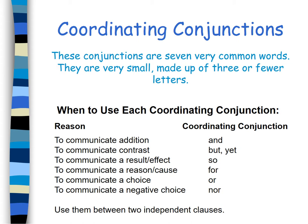To communicate addition, we usually use AND. To communicate contrast, use BUT or YET. To communicate a result or effect, use SO. To communicate a reason and cause, use FOR. To communicate a choice, use OR. To communicate a negative choice, use NOR.